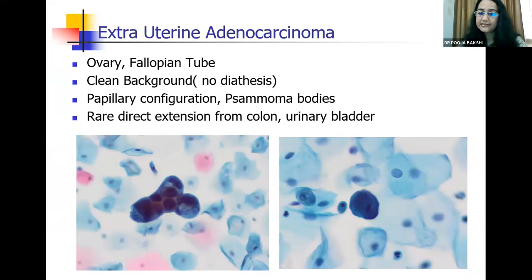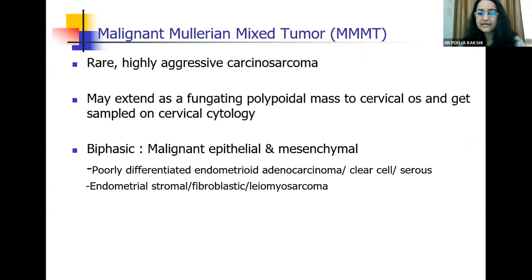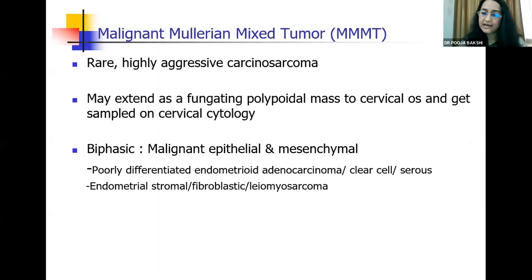Rarely there can be direct extension from the colon and urinary bladder, so keep that in mind. Lastly, a word about malignant mixed Müllerian tumors. These are rare, highly aggressive carcinosarcomas, and since they can form these fungating polypoidal masses extending to the cervical os, they may shed cells in the pap smear. You can see the typical biphasic appearance — the malignant epithelial and the malignant mesenchymal cell — if you are lucky.